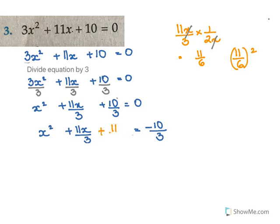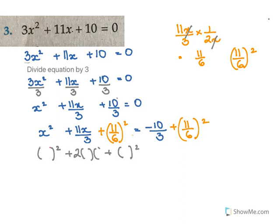So we add (11/6)² to both sides. The left-hand side gives us a perfect square. This is the b² term and here we have the 2ab term. On the right side we have -10/3 + 11²/6², and we know 11² = 121 and 6² = 36.